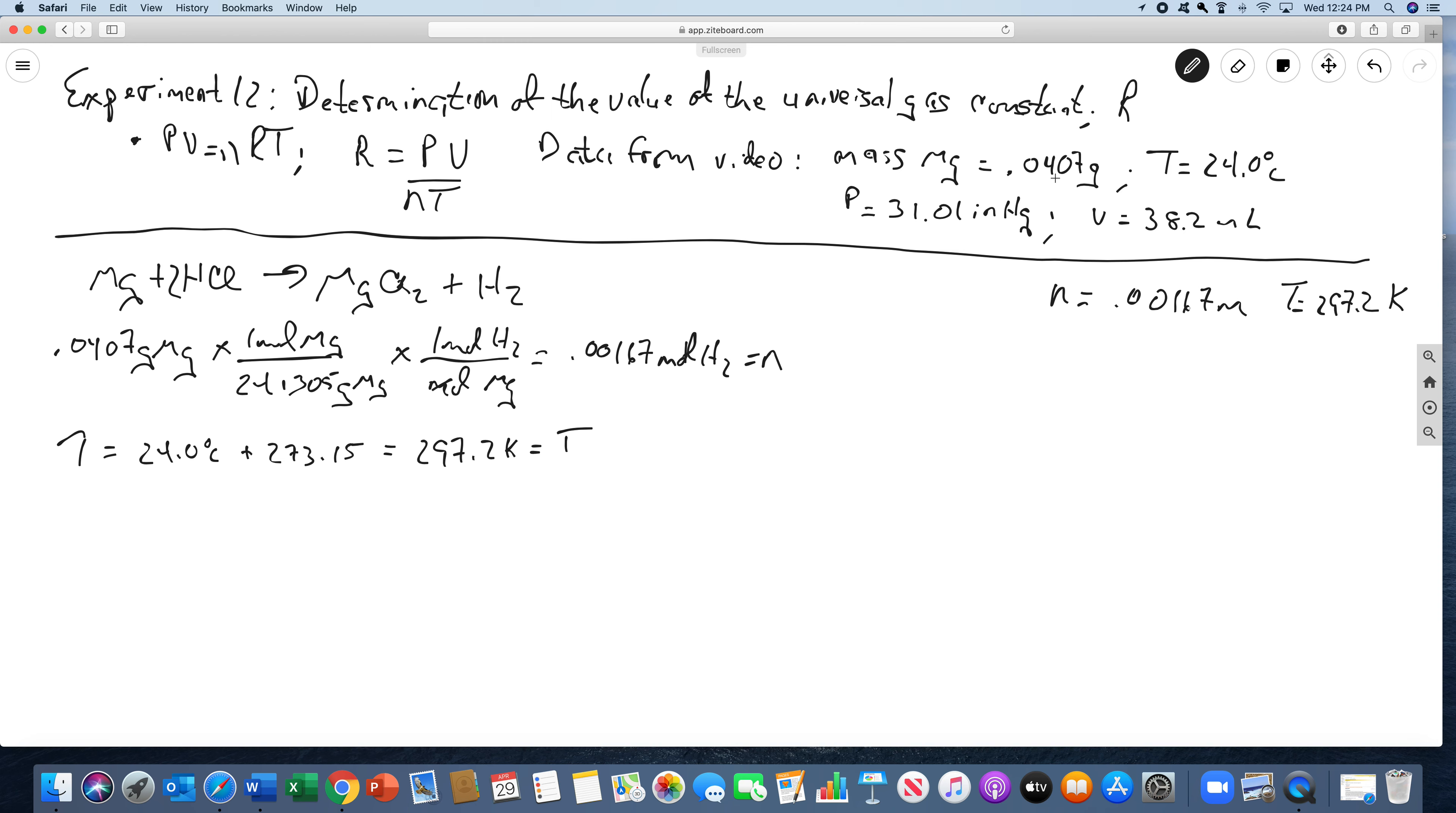The volume is very straightforward. The volume is 38.2 mils, which is, of course, there's one liter for 1,000 mils, which is 0.0382 liters. So V is 0.0382 liters.